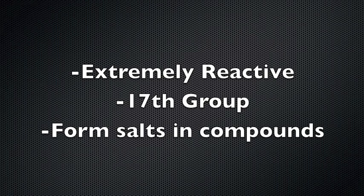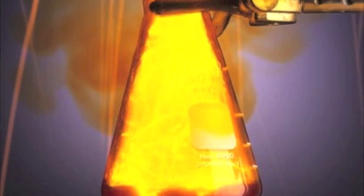In conclusion, halogens are usually extremely reactive. They are the 17th group in the periodic table and form salt in compounds. Thank you for watching and have a good day.